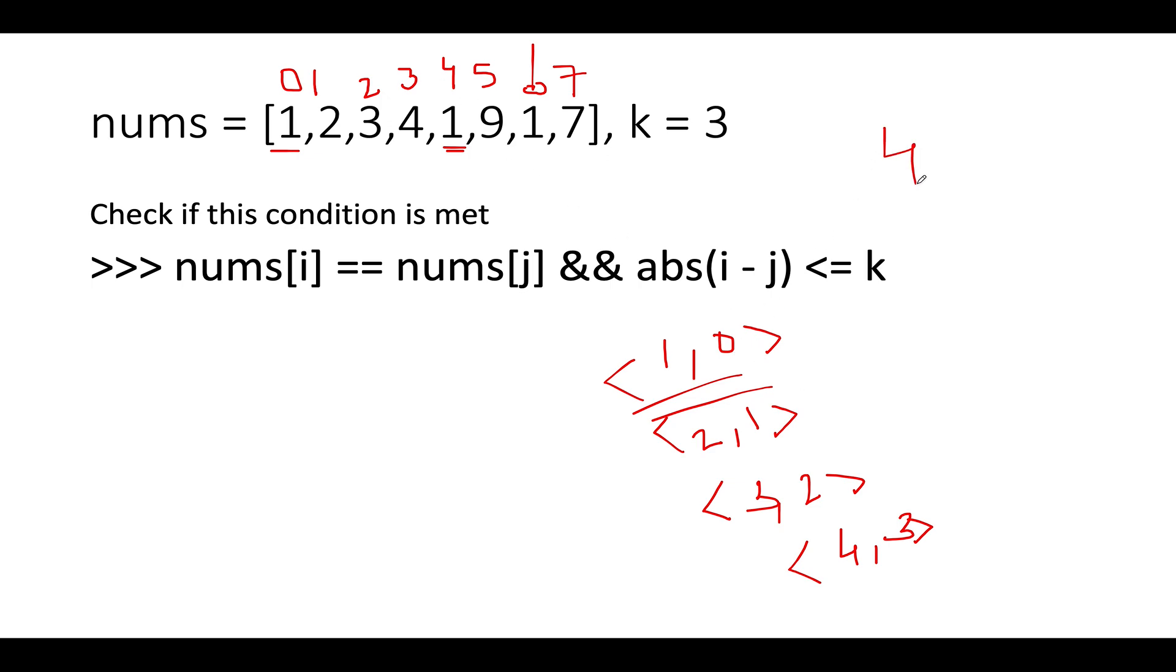So we subtract 4 by 0. What do you get? You get 4. 4 is greater than 3. This condition is not met. As a result we will not abort the process. We will look out for more possibilities of answers. And since this can never lead to a solution, what are we going to do? We will update the index at which 1 occurs from 0 to 4. Let's update it to 4.